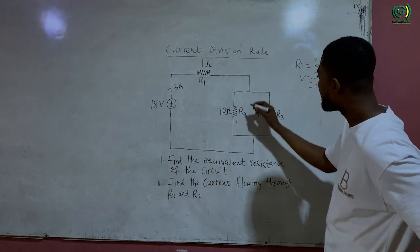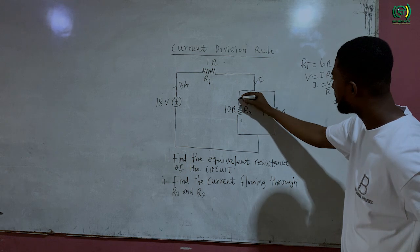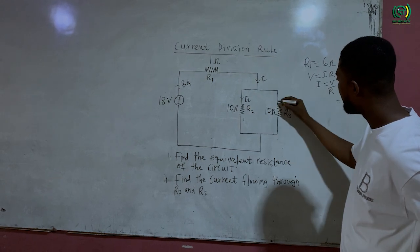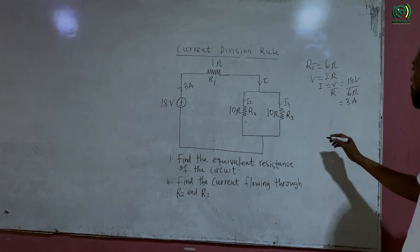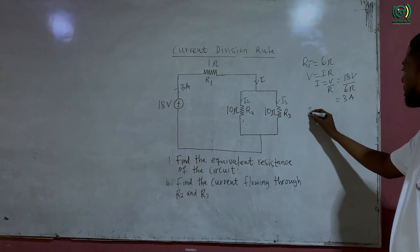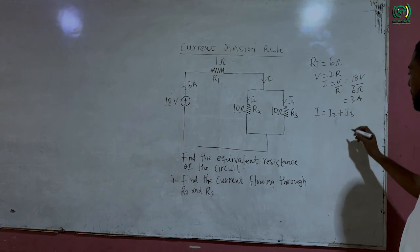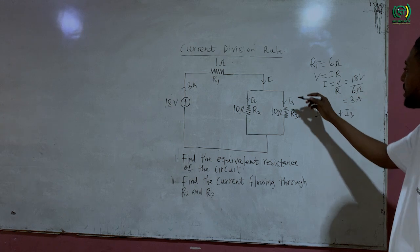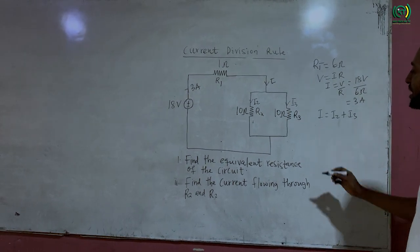So here I can say that if this is I, this would be equal to I2 and this would be equal to I3. So from Kirchoff's current law I is equal to I2 plus I3. So the current entering the junction should be equal to current leaving the junction.